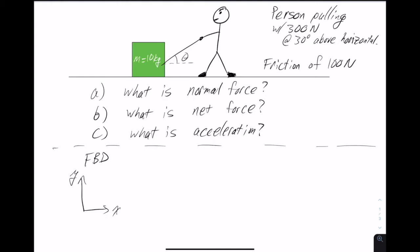In our free body diagram, our picture is just a dot. We have the pulling force, which is up and to the right. We have the force of gravity, which always points down — we can write that as f sub g, which equals mg, the mass of the object times the acceleration due to gravity. Then we have friction, which is a dissipative force and always opposes motion. Because the person is pulling to the right, the force of friction points to the left — friction is always parallel to the surface.